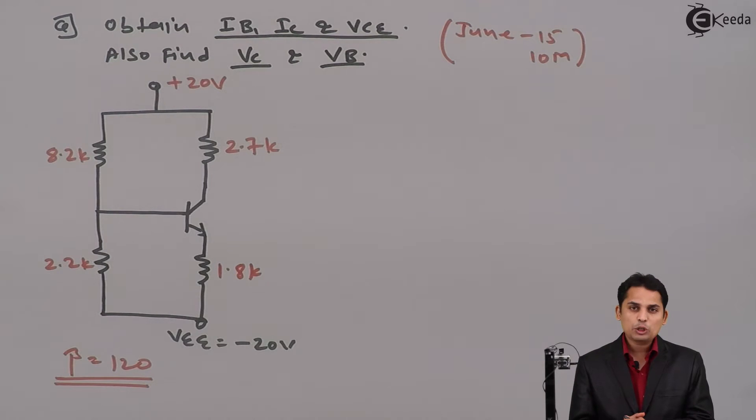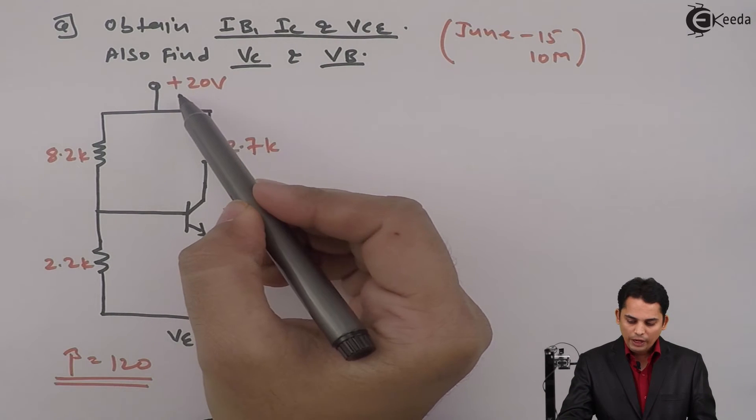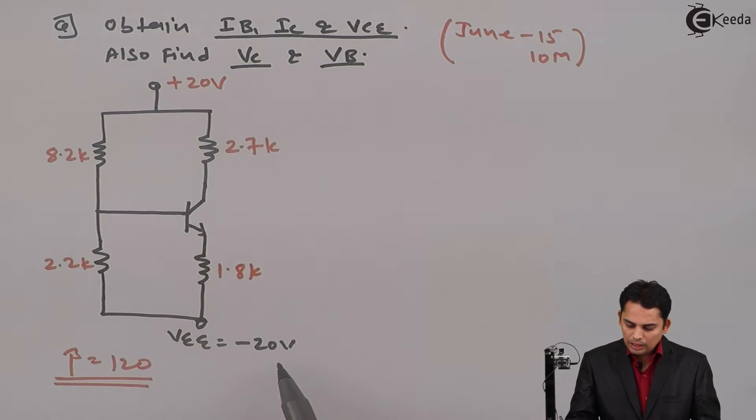Now we can see that in this problem there are two DC batteries attached. One battery is attached at the collector. The other battery is attached at the emitter. At the emitter, value of battery is minus 20 volts. So now this problem is slightly different from voltage divider bias. As previously there used to be only one battery, whereas in this circuit there are two DC batteries applied to a circuit.